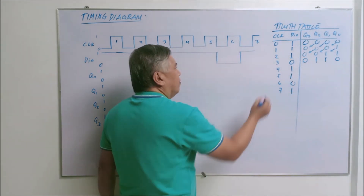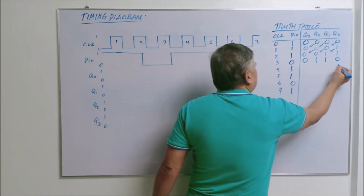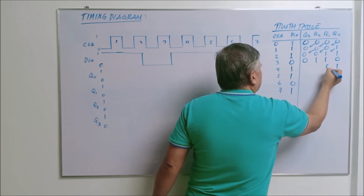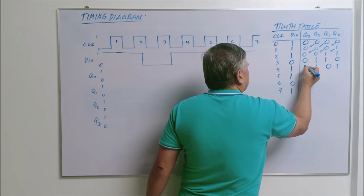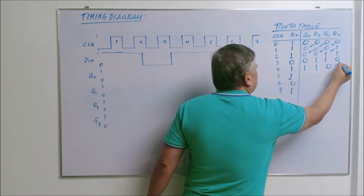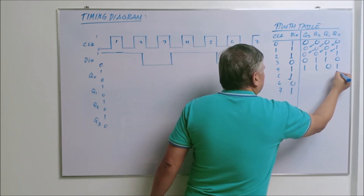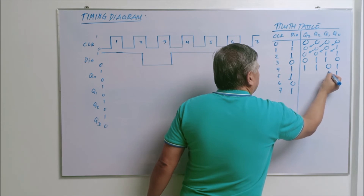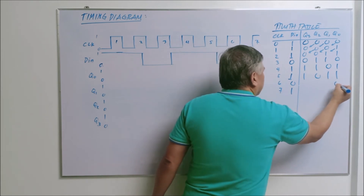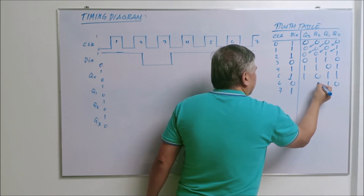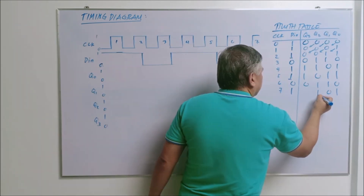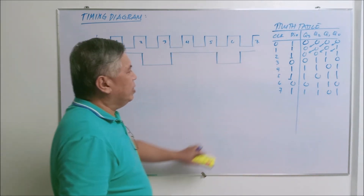On the fourth positive triggering the input is one, so Q sub zero becomes one; the previous values shift left — Q sub one is zero, Q sub two is one, Q sub three is one. On the fifth positive triggering the input is one, so Q sub zero is one; Q sub one is one, Q sub two is zero, Q sub three is one. Then you have Q sub two becoming one, Q sub three becoming zero, one, one. That completes the table for this timing diagram.